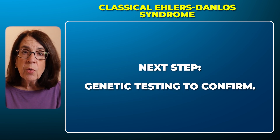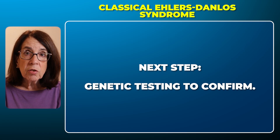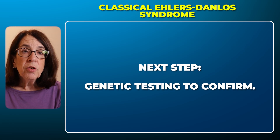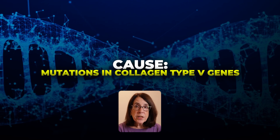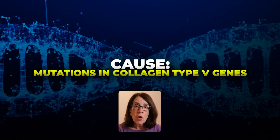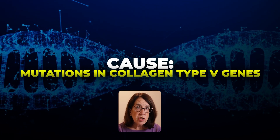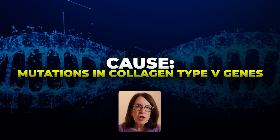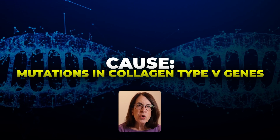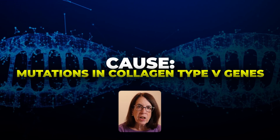Once a person has been evaluated using these clinical criteria and meets them, it is recommended that they undergo genetic testing to confirm the diagnosis. The classical type of Ehlers-Danlos Syndrome is caused by pathogenic variants — disease-causing changes in the DNA — in the two genes that encode type 5 collagen, called COL5A1 and COL5A2.